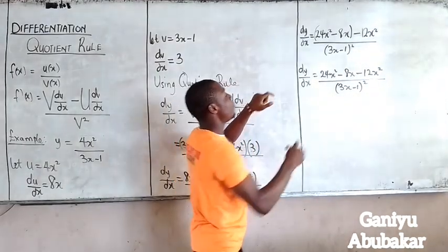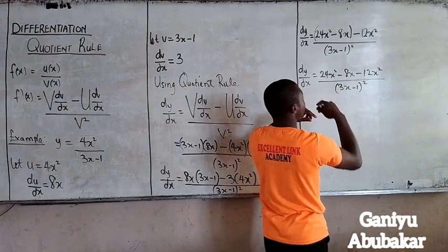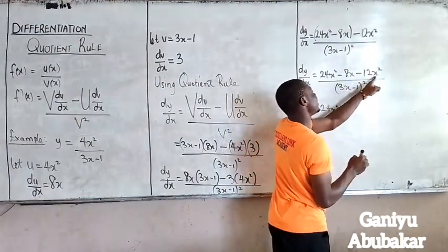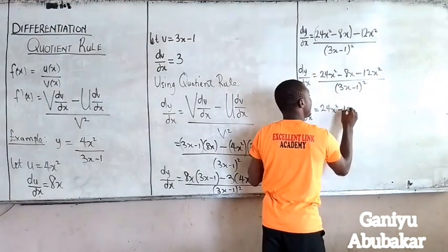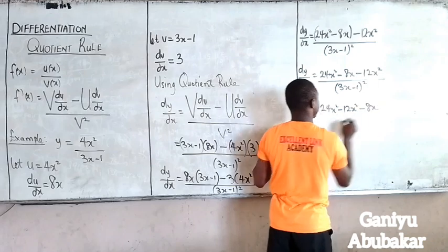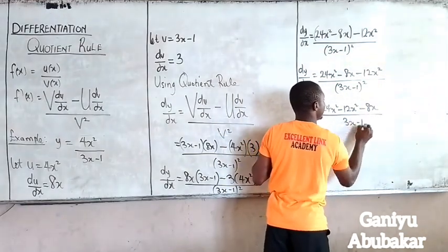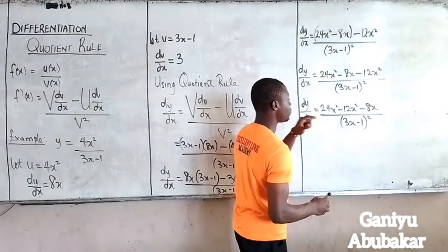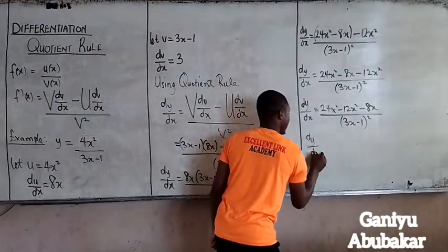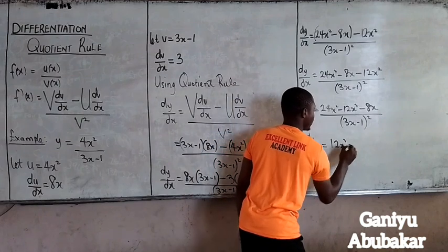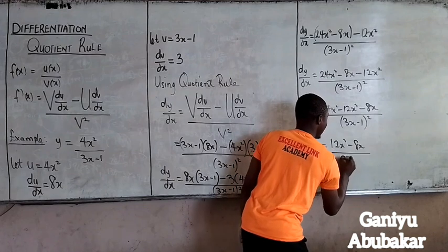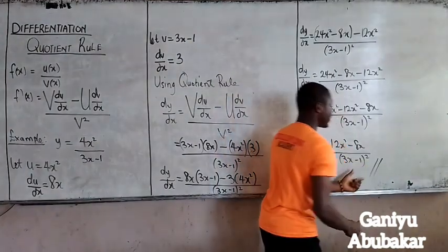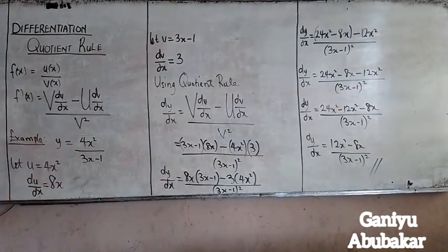Now if you look closely, my numerator has like terms. So I will collect like terms. 24x squared minus 12x squared gives 12x squared. Then minus 8x. So dy/dx is equal to 12x squared minus 8x, all over 3x minus 1 squared. You can also choose to factorize the numerator. So this is my answer after solving this problem using the Quotient Rule.